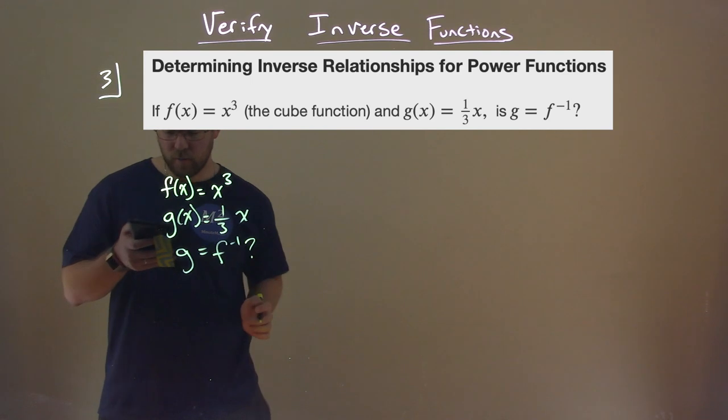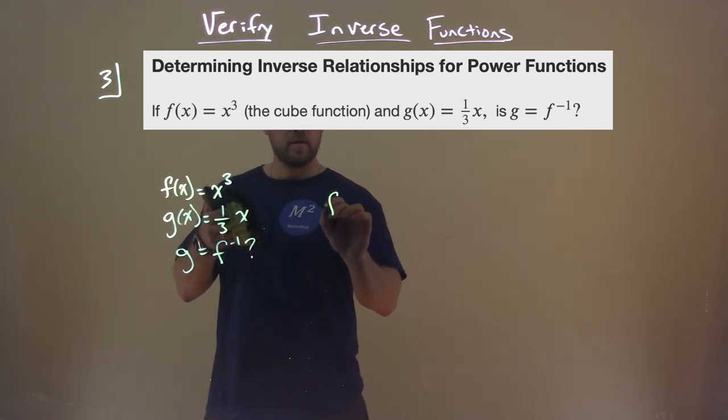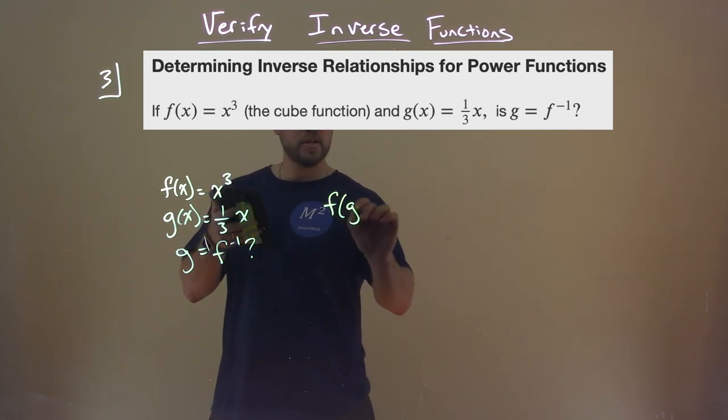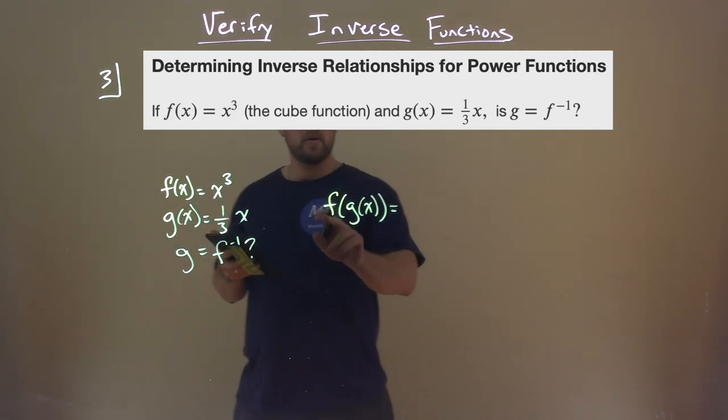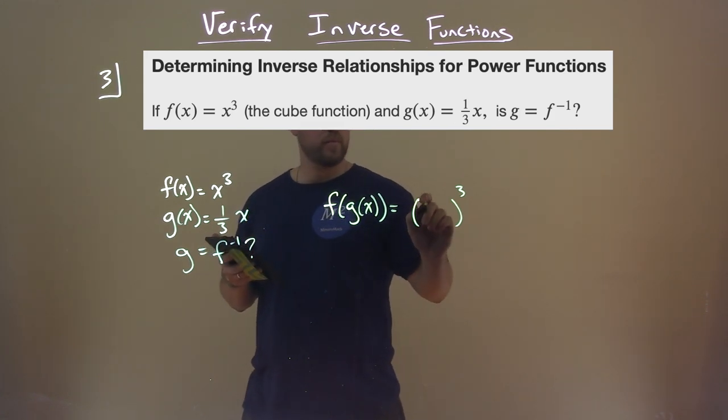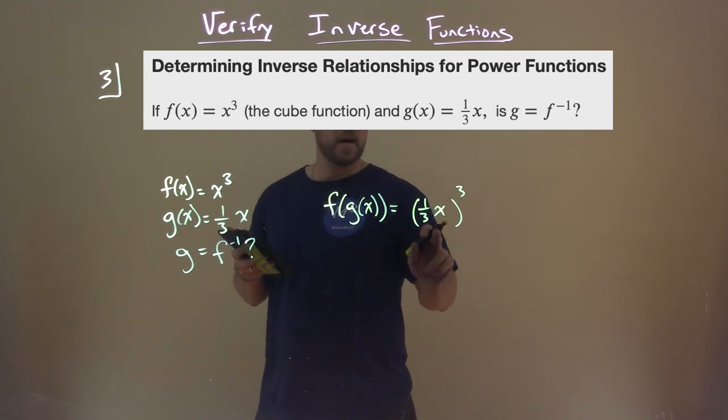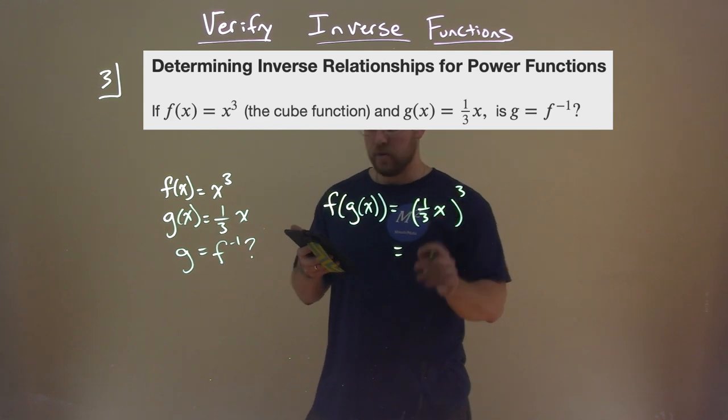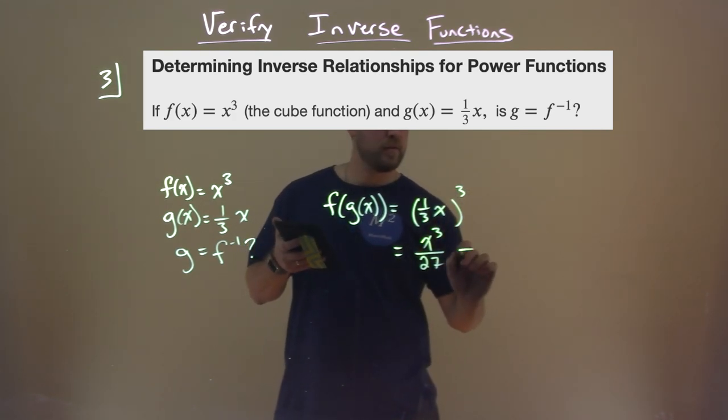So if we want to see if g is equal to f inverse, then we should see if f of g of x, what is that equal? Well, f of g of x, so f is x to the third power, so inside there we're going to put 1 third x. Simplify that: 1 third times x to the third power, that's x to the third power over 27. Remember, we apply the third power to all parts there. And is that equal to x? No.